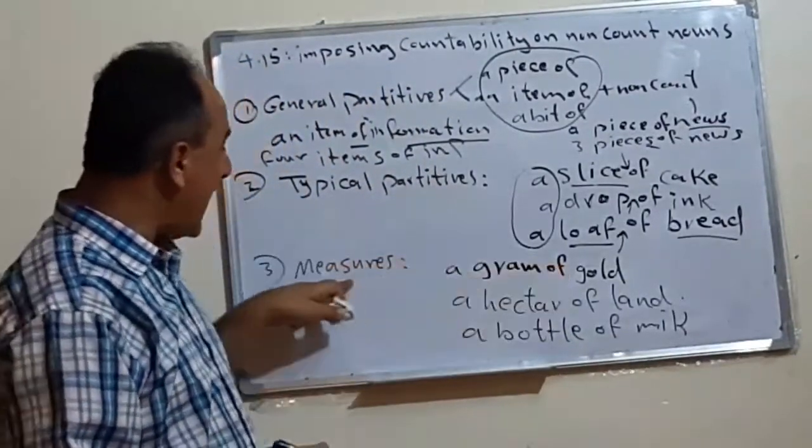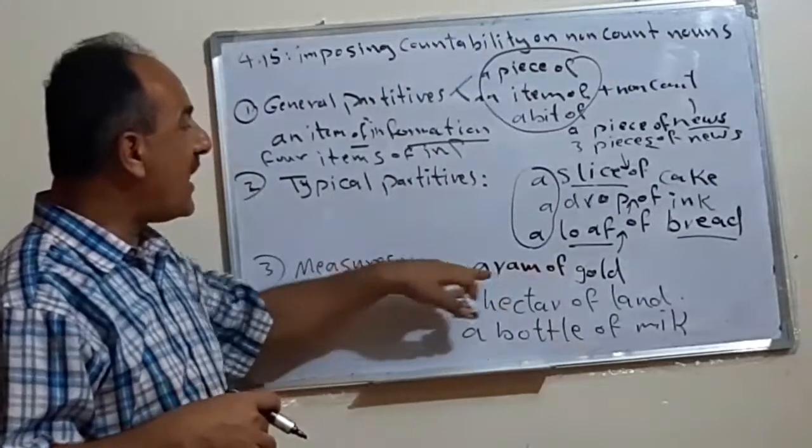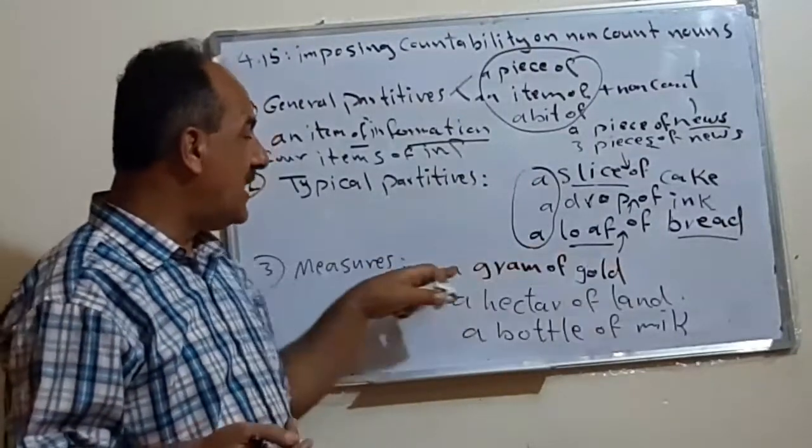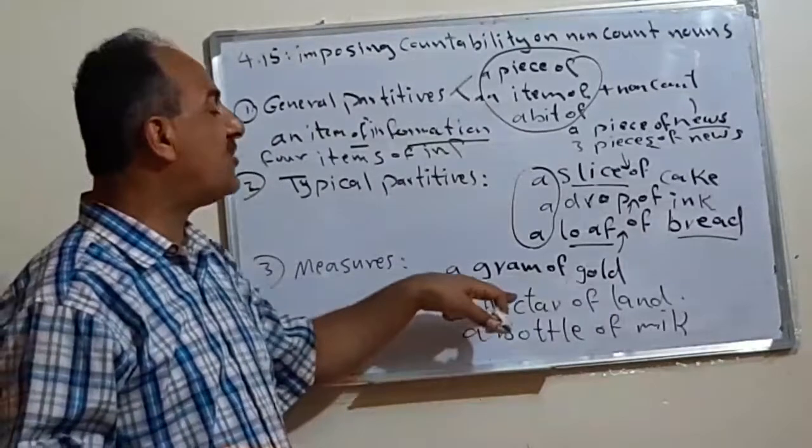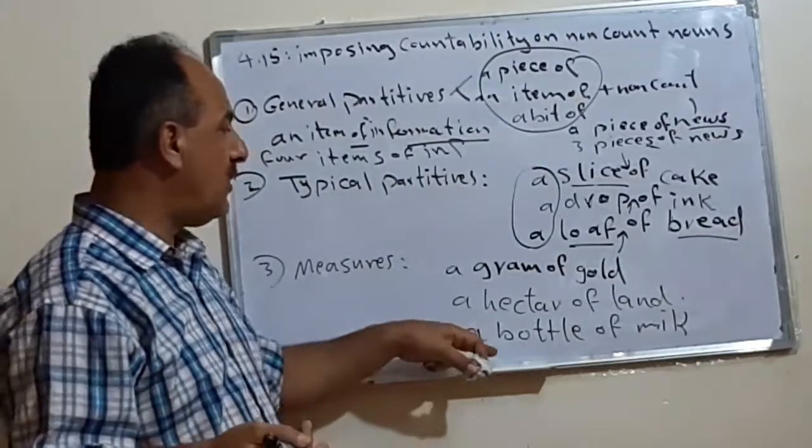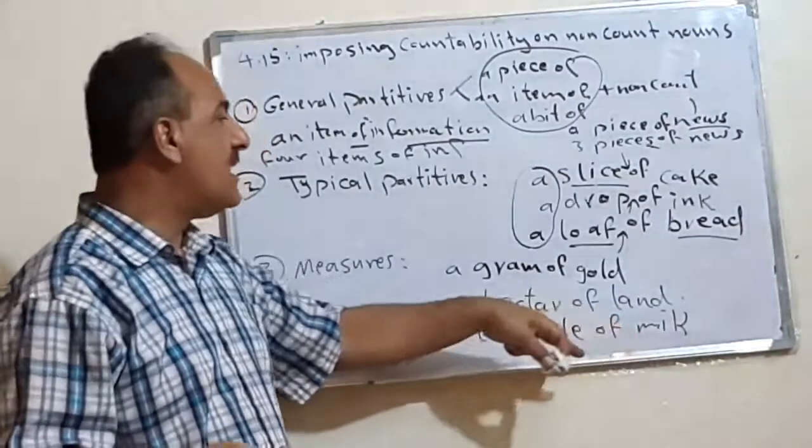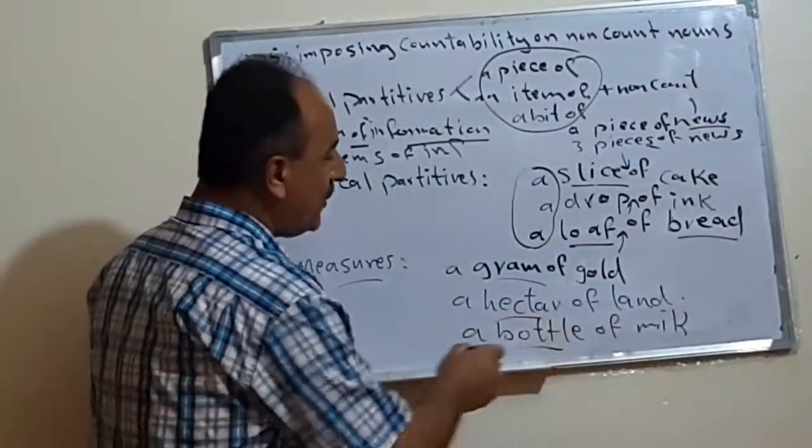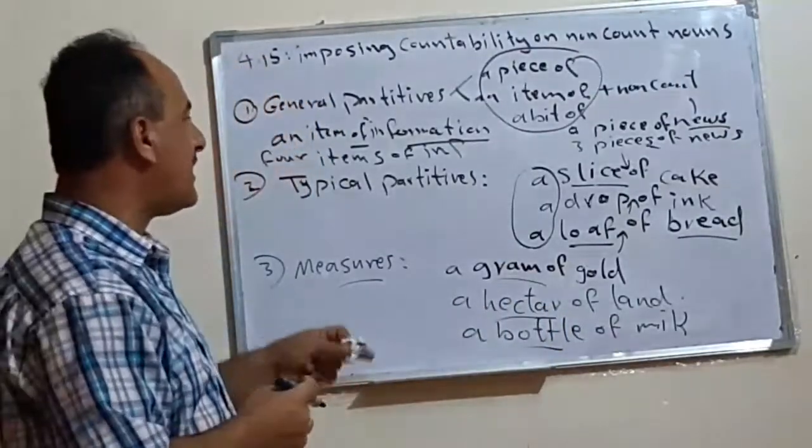Say, a gram of gold. These are measures. Unit that we use for such nouns. So, a gram of gold. If we have more, we say, 10 grams of gold. 10 grams. If we have more than one hectare, say, for example, 15 hectares of land. If we have, for example, large number of bottles, we say, for example, 25 bottles of milk. So these are, we call it what? Measures. Say, gram, unit, or say, kilometers, or meters, et cetera.